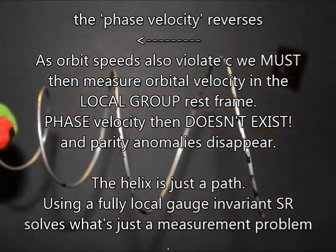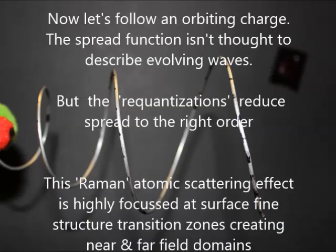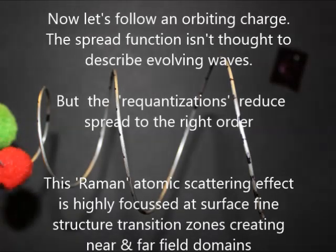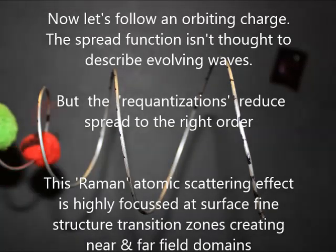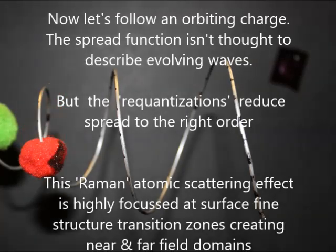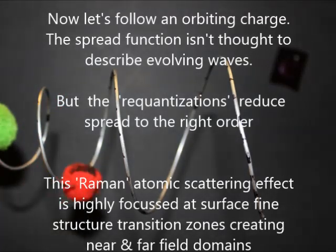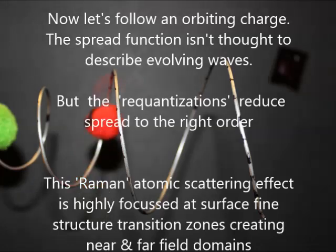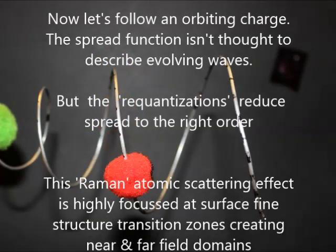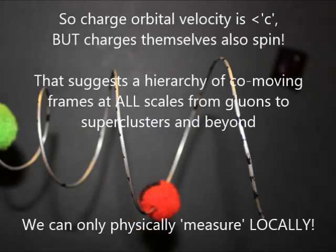The helix is just a charge path. Using SR fully locally solves what's really just a measurement problem. Now let's follow an orbiting charge. The spread function isn't thought to describe evolving waves, but the re-quantizations reduce spread to the right order. This Rayleigh atomic scattering effect is highly focused at surface fine structured transition zones, creating near and far field domains.